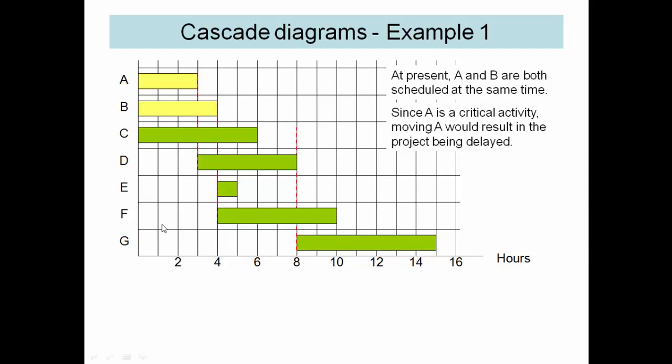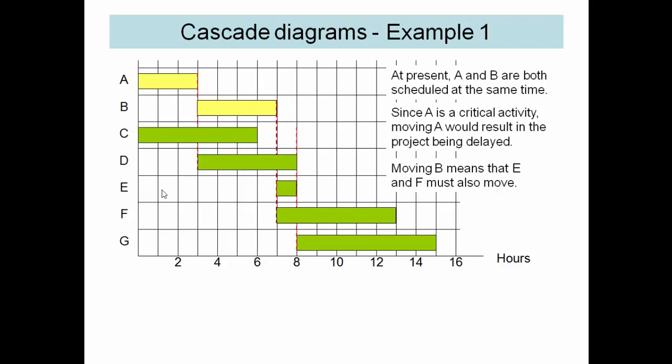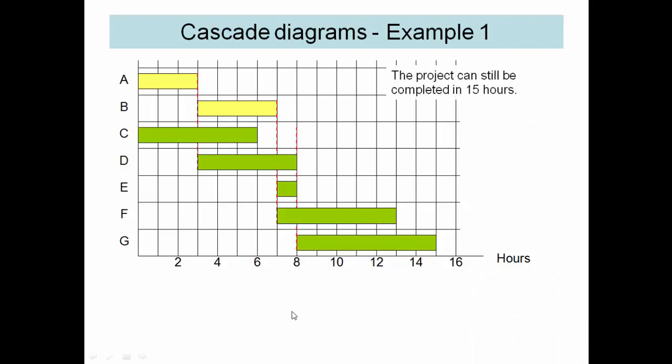So let's see what happens if we try moving B. E and F will follow B, and we can see that here with the broken line. If we move B, we can see we can actually move it here until after A is finished. And E and F move along without affecting anything else. So we can still complete the project in 15 hours.